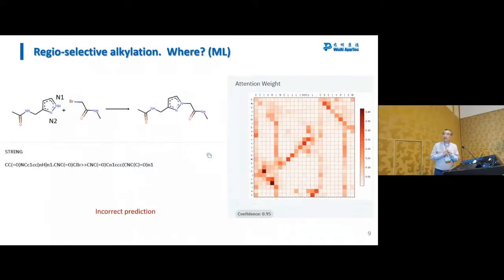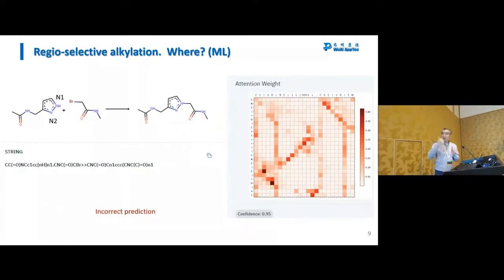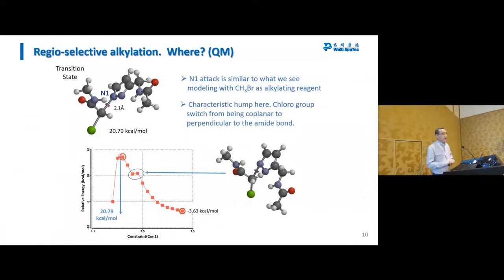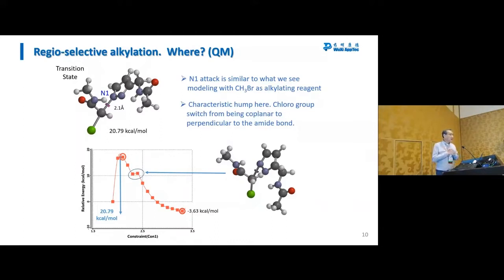Next is the alkylation on a pyrazole: would it occur on N1 or N2? I would predict it will occur on N1, further away from the side chain, due to steric reasons. The IBM reaction prediction tool agrees with me — but both of us are wrong. Our chemists know from experience that for certain substrates and alkylating reagents that could potentially form halogen bonds, those halogen bonds can sometimes slow down and sometimes actually speed up the reaction.